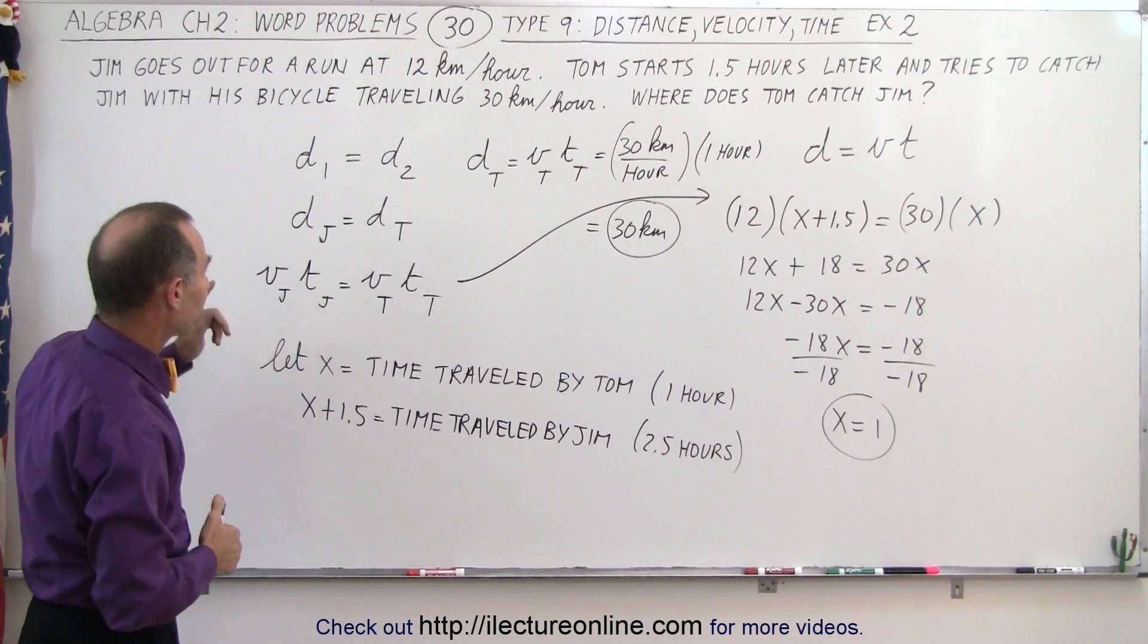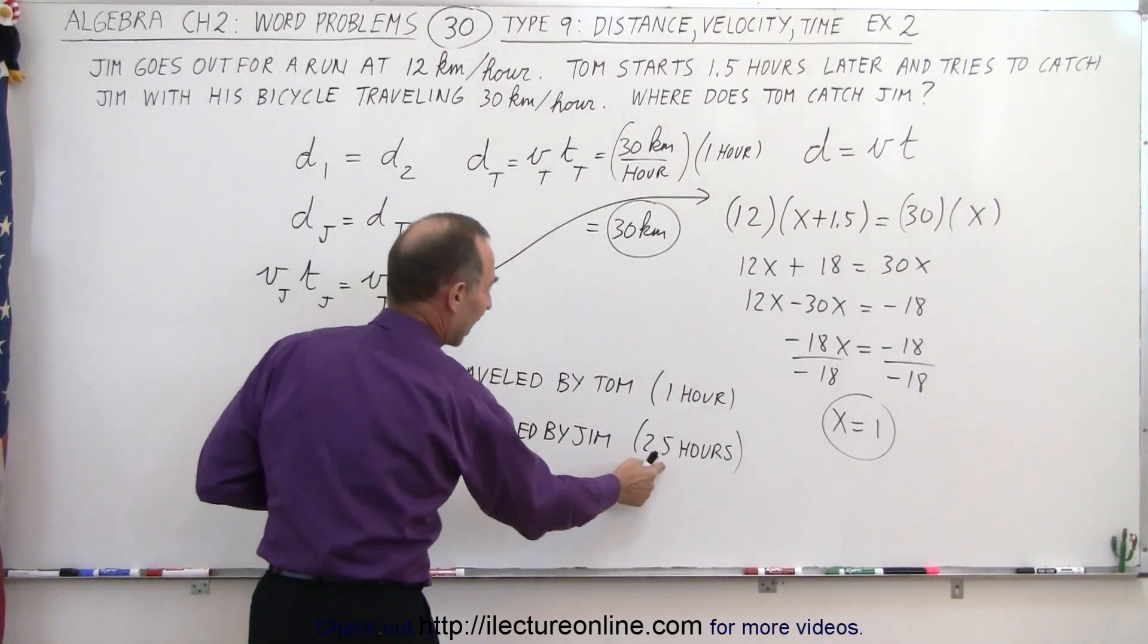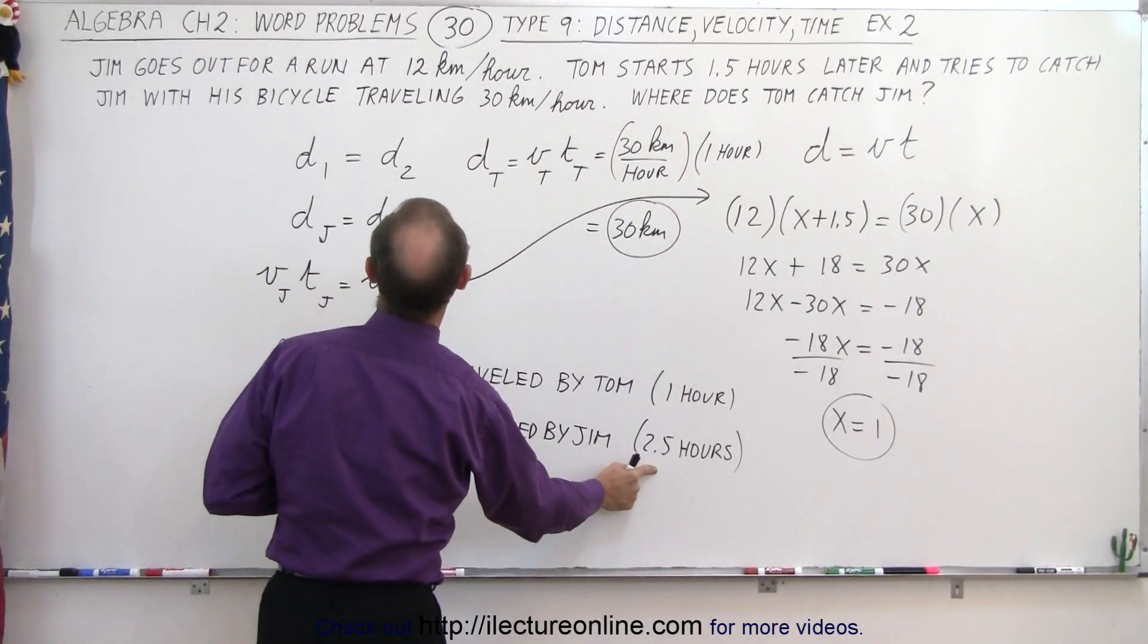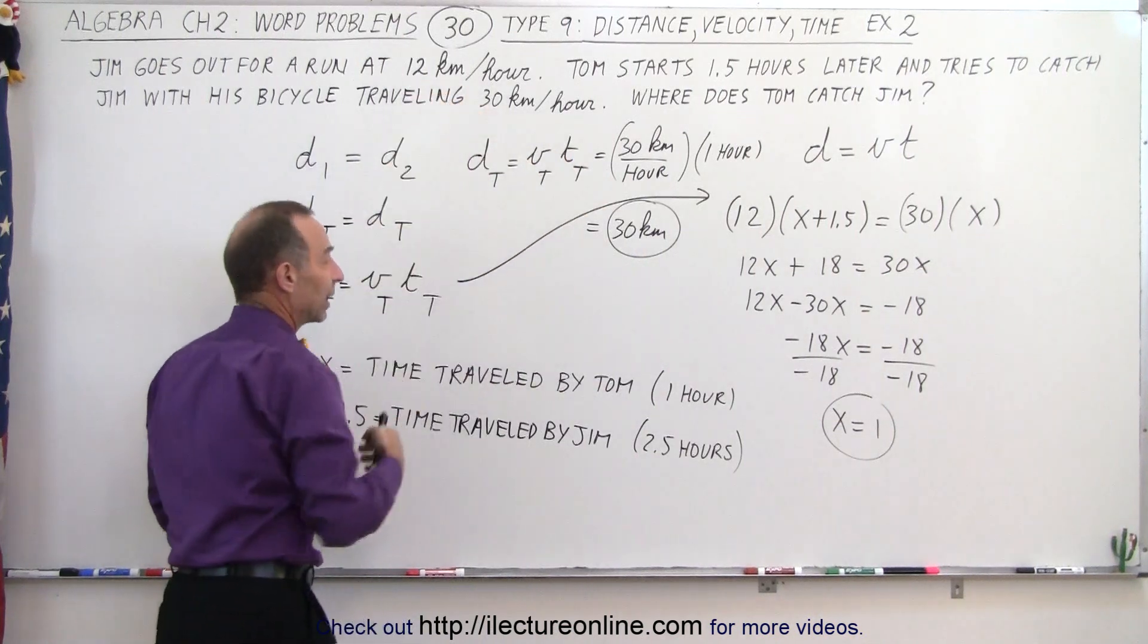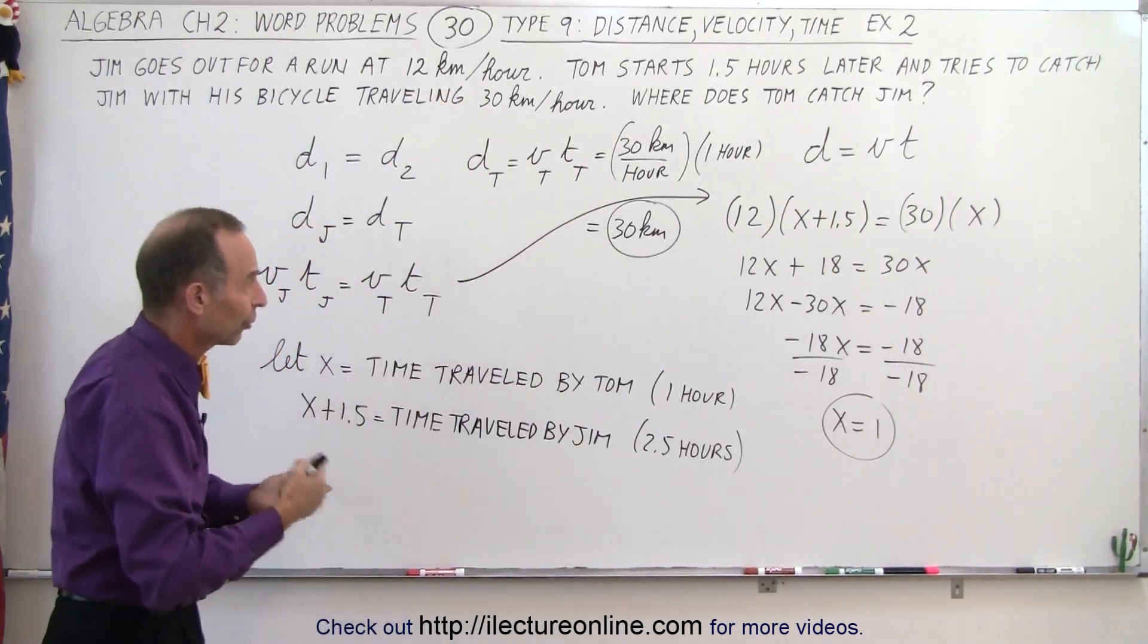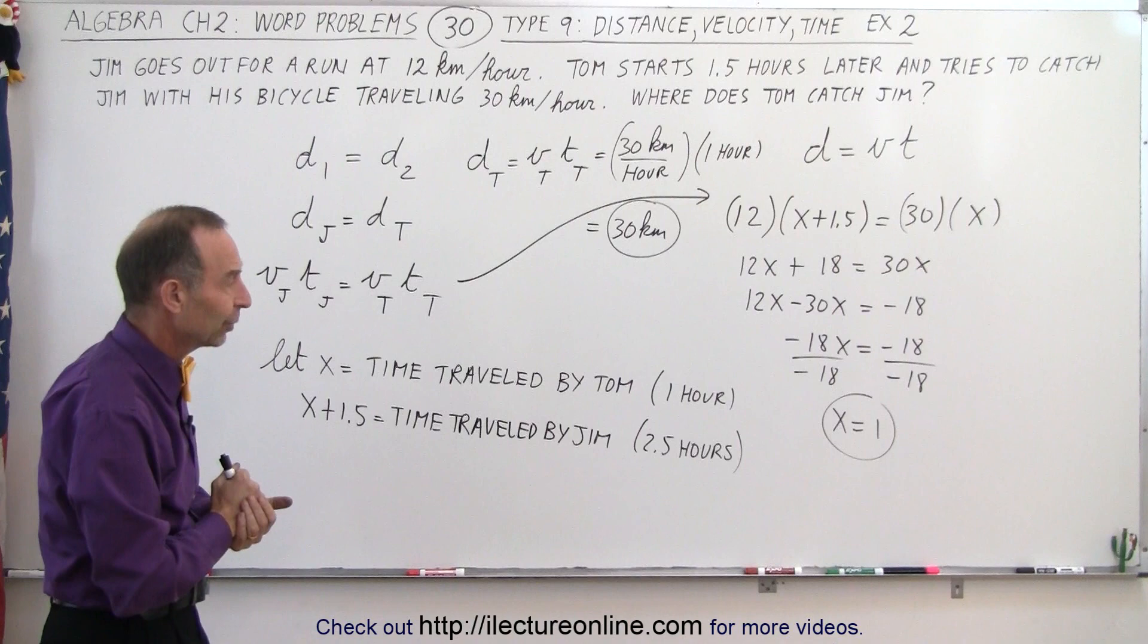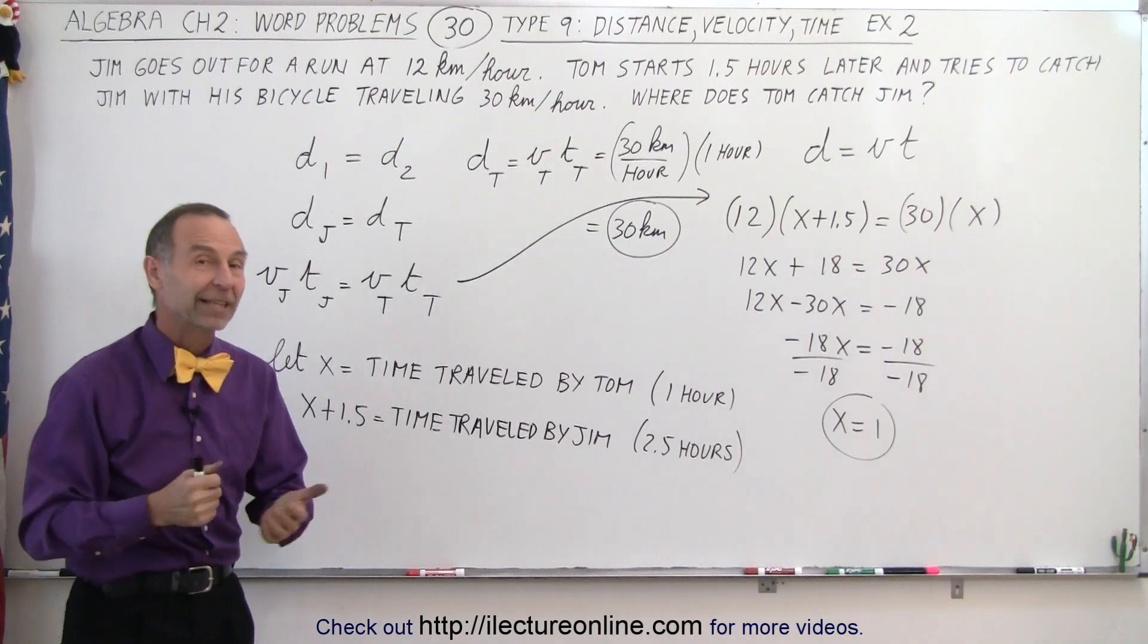And notice that Jim was therefore traveling for 1 hour plus 1.5, or 2.5 hours. 2.5 hours traveling at 12 kilometers per hour gives you the same distance, 30 kilometers. So it looks like we did the problem correctly. And that's how it's done.